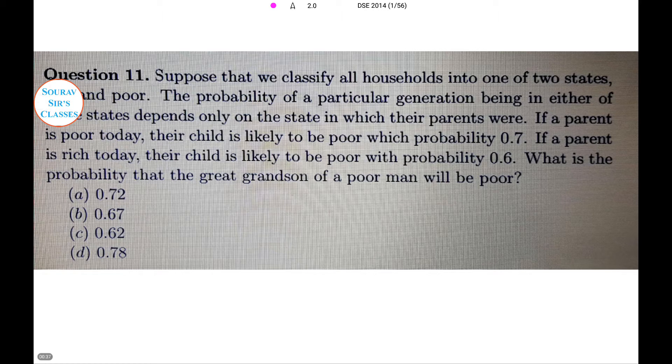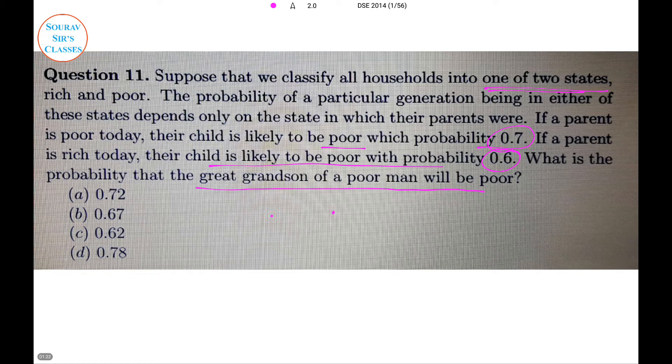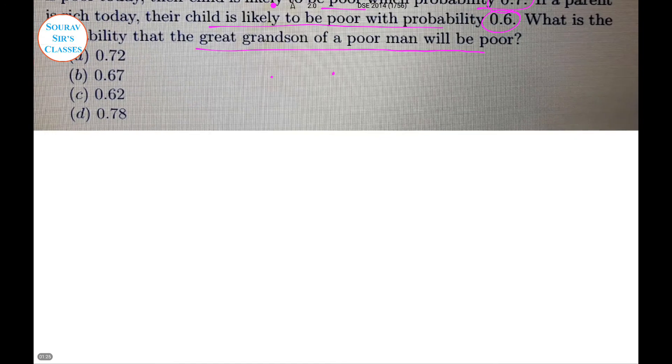Here I have segmented the questions. Let's start with the stat one. We have a question: suppose that we classify households into one of two states, rich and poor. The probability of a particular generation being in either state depends only on the situation of their parents. If a parent is poor, the child is likely to be poor with probability 0.7. If a parent is rich today, the child is likely to be poor with probability 0.6. What's the probability that the great-grandson of a poor man will be a poor man? Let's see how to solve this.